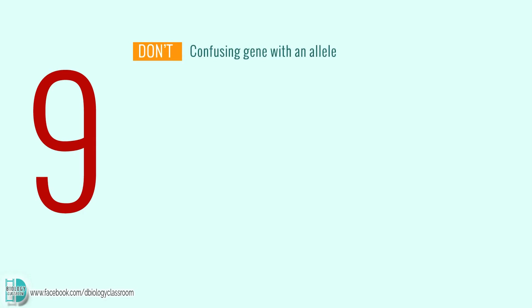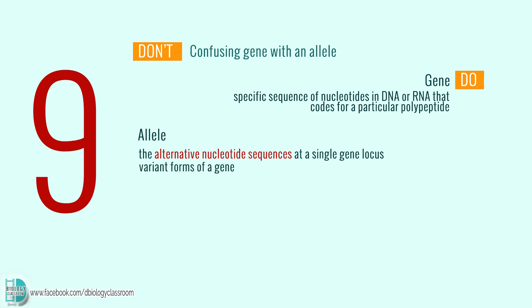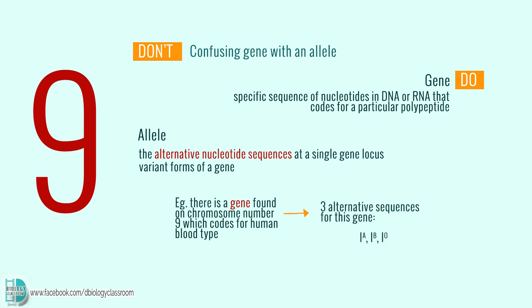Number 9: Confusing gene with an allele. A gene is the specific sequence of nucleotides in DNA or RNA that codes for a particular polypeptide. An allele is the alternative nucleotide sequence at a single gene locus — they are the variant forms of a gene. For example, there is a gene found on chromosome number 9 which codes for human blood type. There are three alternative sequences for this gene: A, B, and O. They are the alleles for this gene.